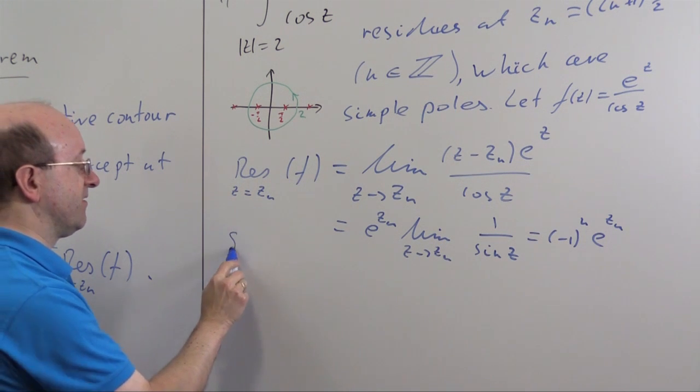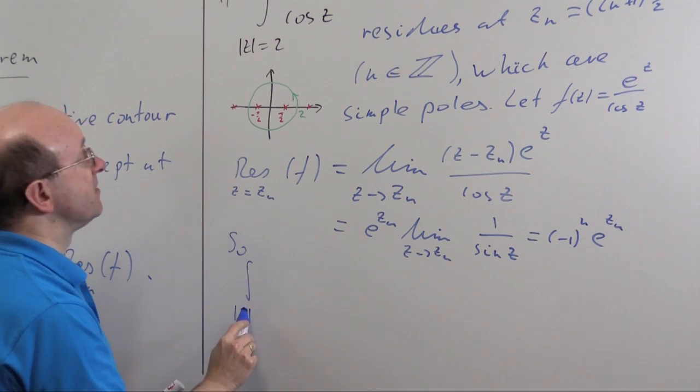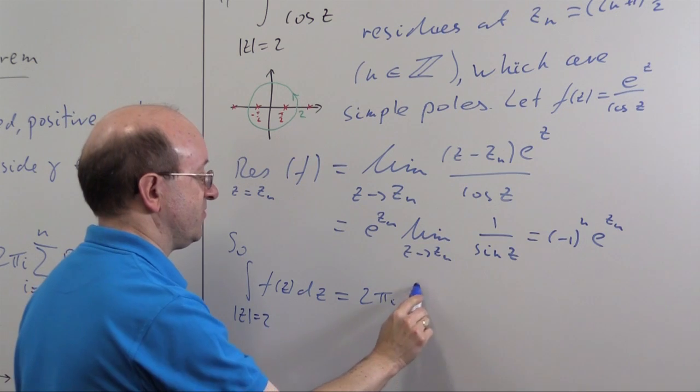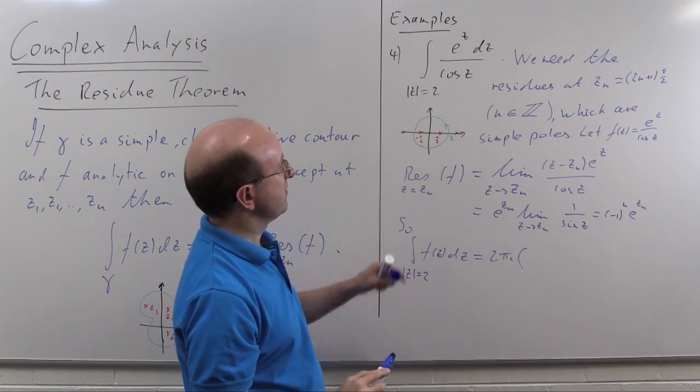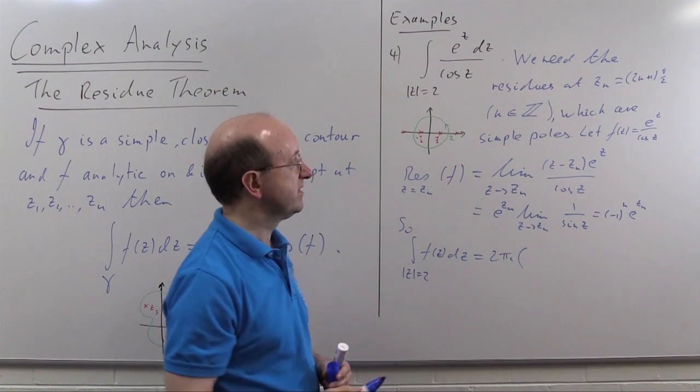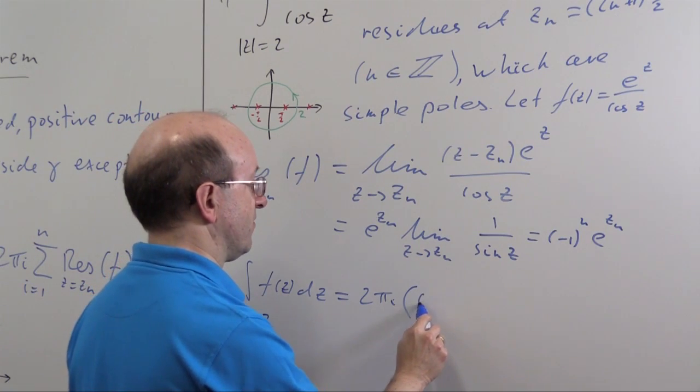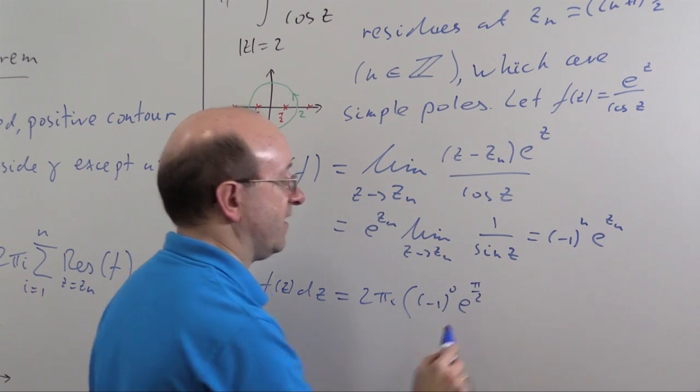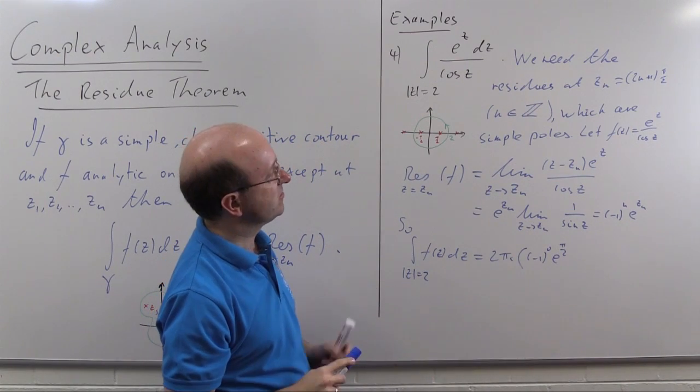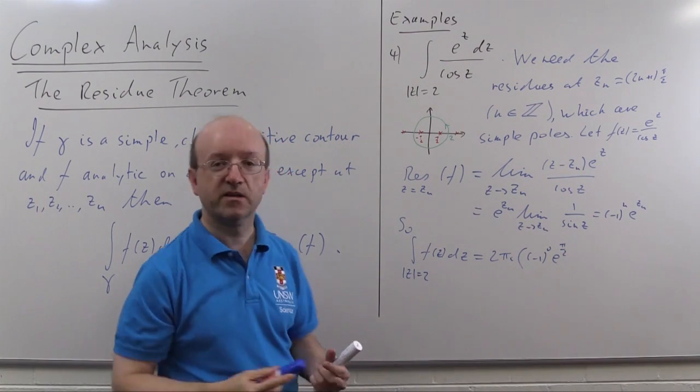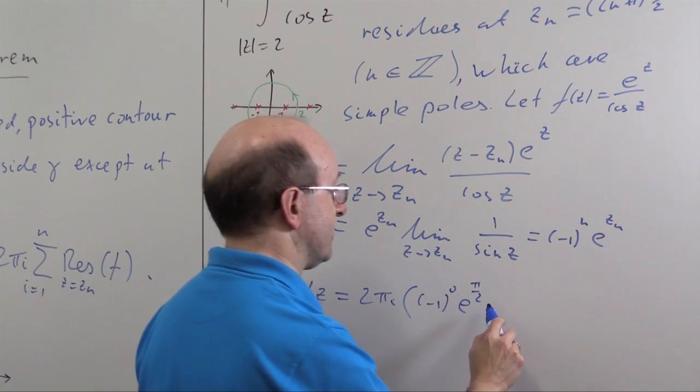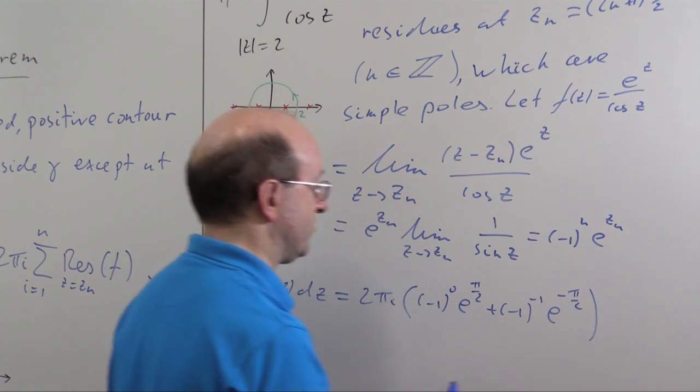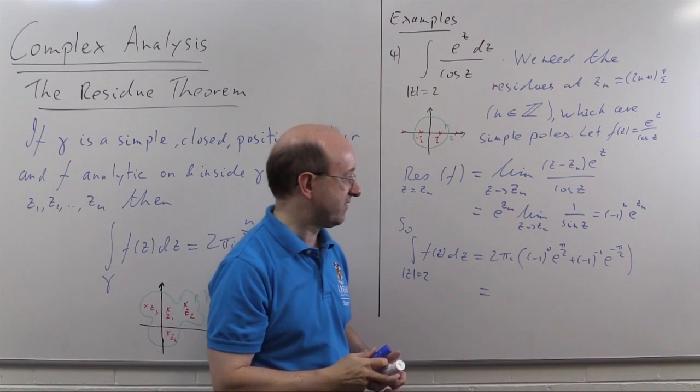So we can now write down our integral, the integral around |z| = 2 of f(z) dz is 2πi times, well the residue at π/2, that's given by n = 0. So that's (-1)^0, I'll write it out, (-1)^0 e^(π/2) plus the residue at -π/2, that's given by taking n to be -1. So we're going to get plus (-1)^(-1) e^(-π/2),